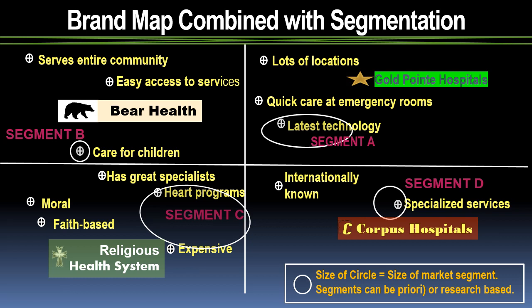A powerful addition to a brand map is a representation of the size of the market an attribute represents. In this example, suppose Bear Health has just as good a cardiac program as religious health systems. Bear Health could mount a marketing campaign to change patients' perceptions and move their position to the largest market segment, which is represented by segment C — heart programs.